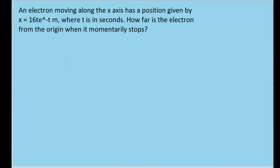So we have an electron moving along an x-axis and we have a formula for that electron's position on the x-axis. I'm going to write this out here in a slightly easier to read fashion. So it's 16 times t times e to the power of negative t.